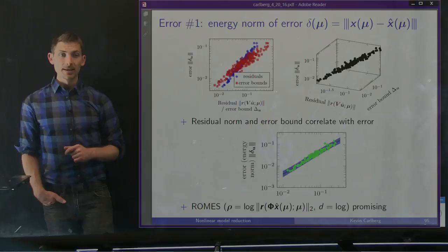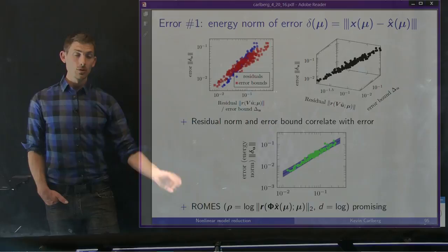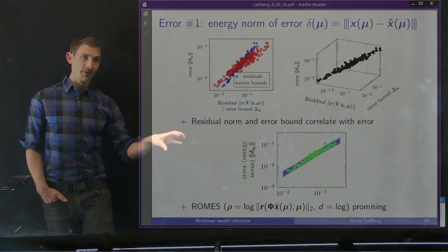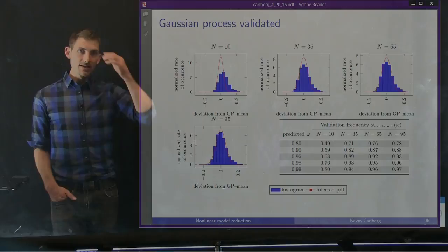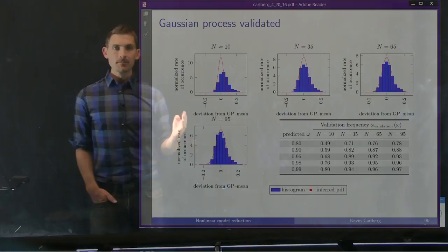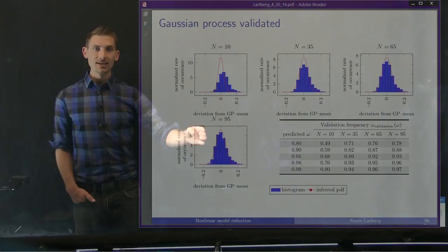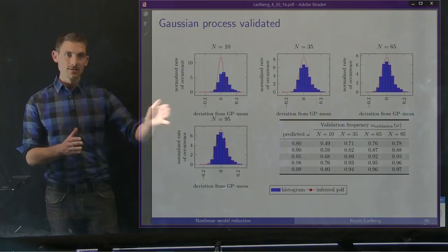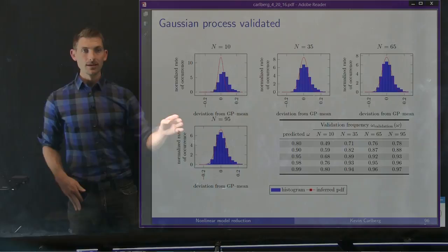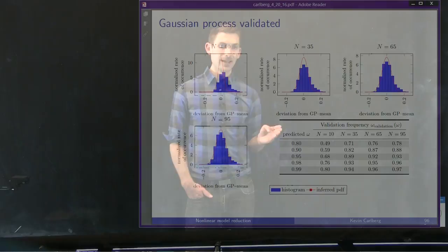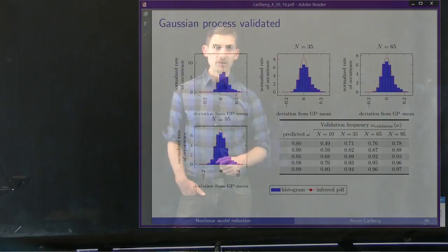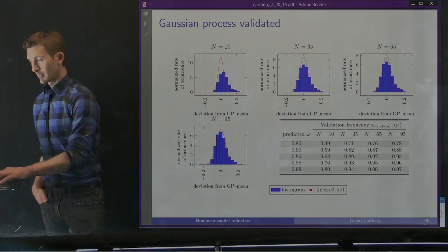This lends insight that the residual norm and error bound correlate with the real error, confirming they are good indicators. As suggested by our analysis, we use the log of the dual norm of the residual with the logarithmic transformation function. We generate a pretty low variance model. Validating by increasing the number of training instances from 10 to 35 to 65 to 95, we see that our predicted confidence intervals — at 80, 90, 95, and 99% levels — align very well with what the numerics show and histograms confirm. So we've cross-validated our model.